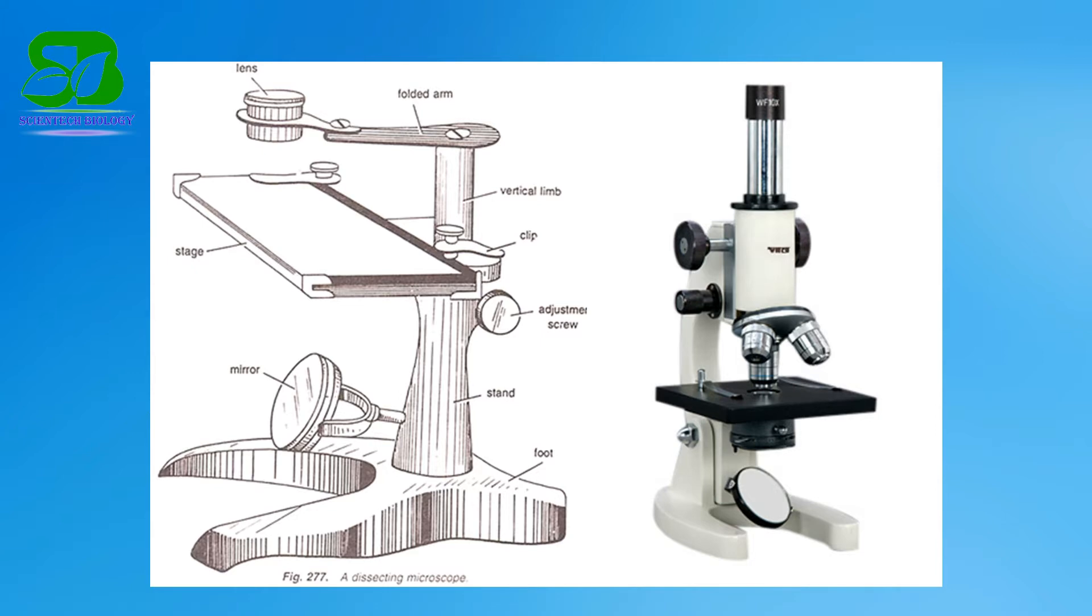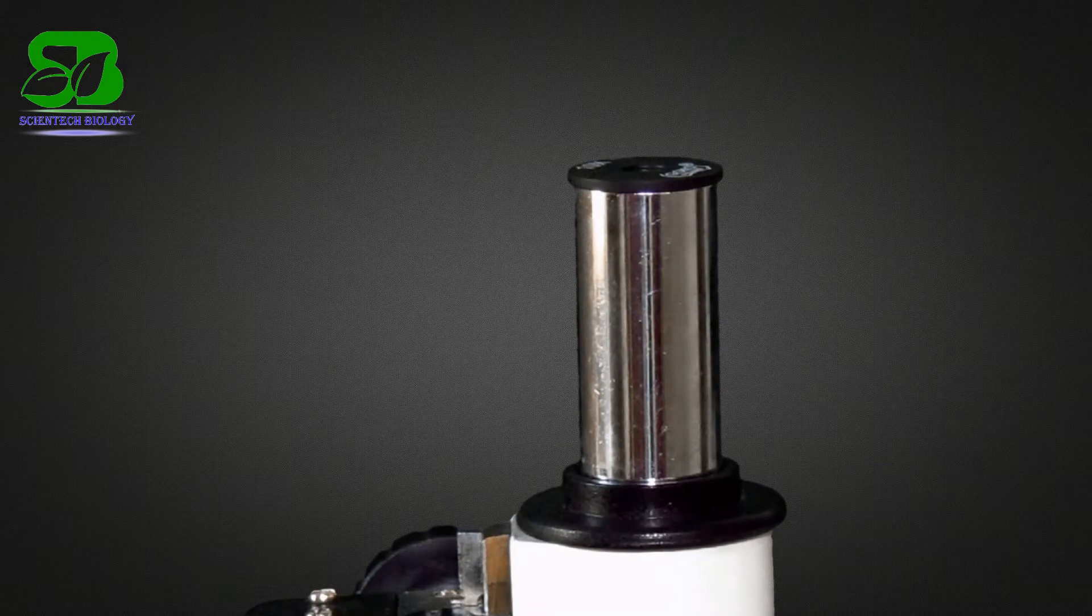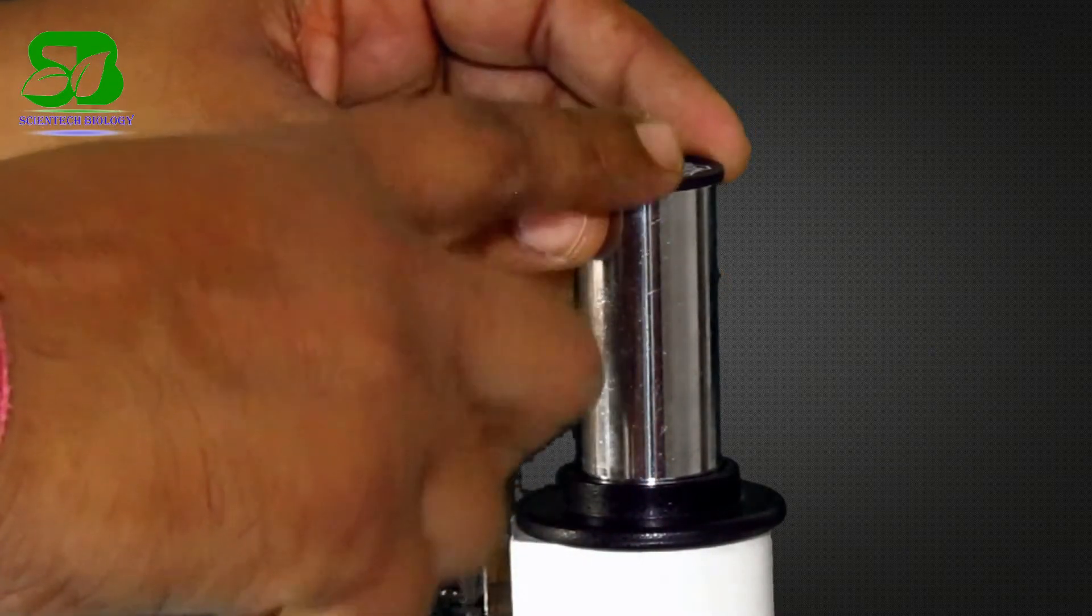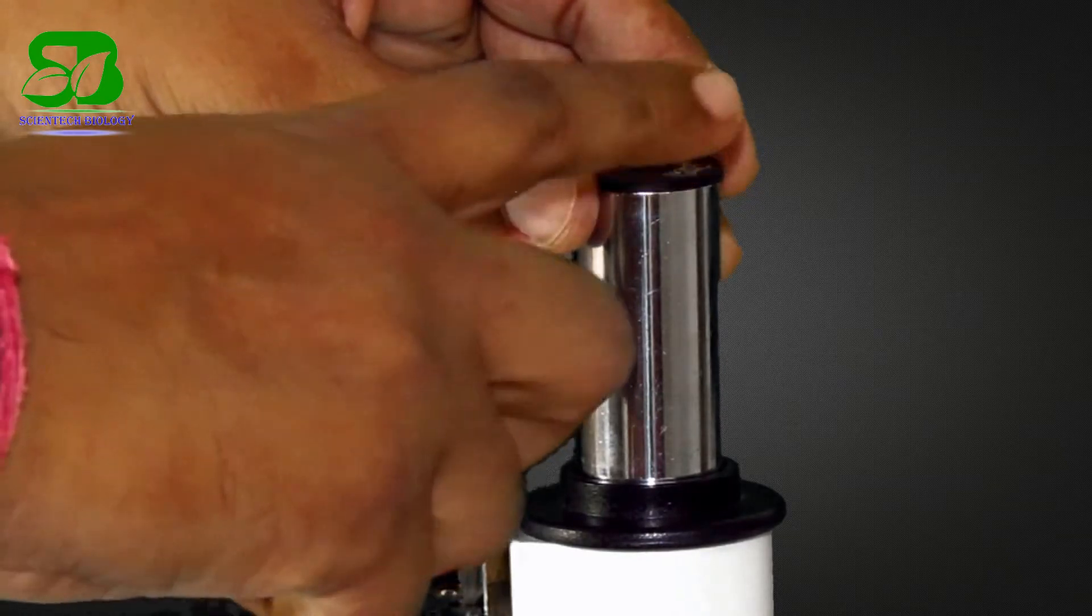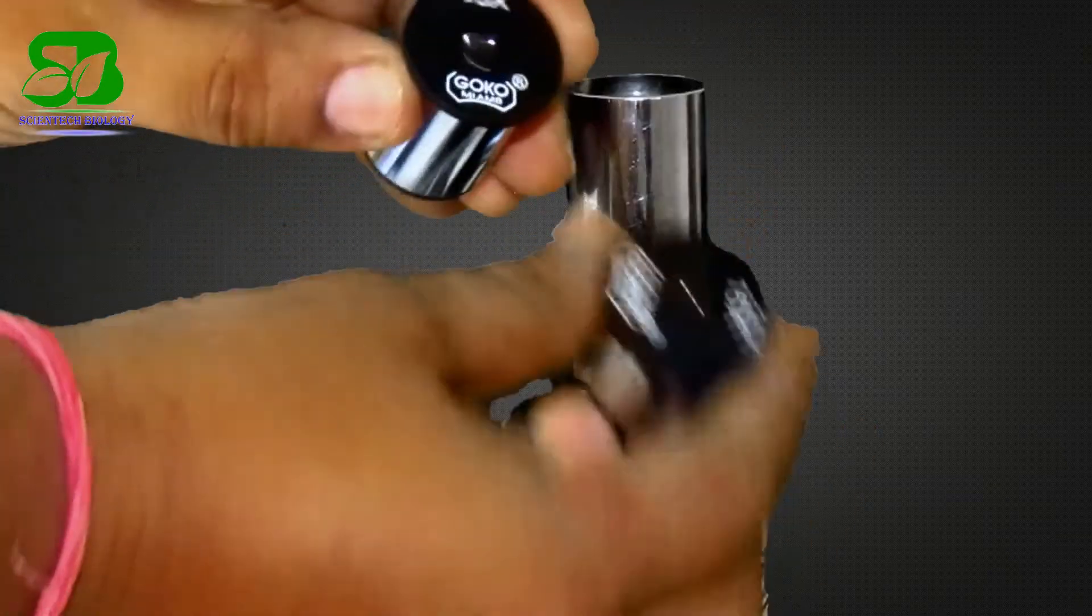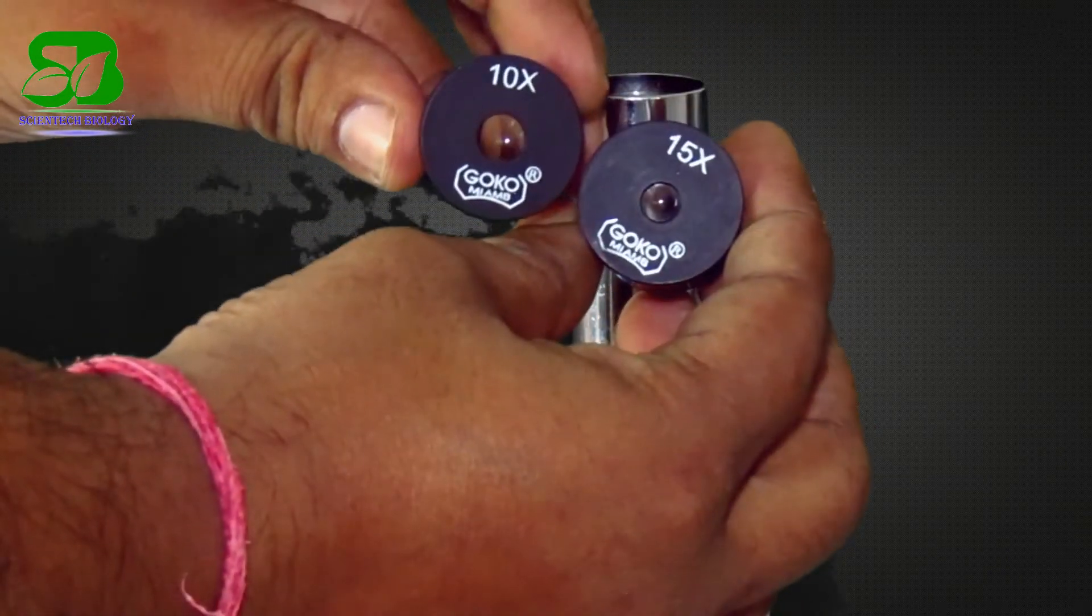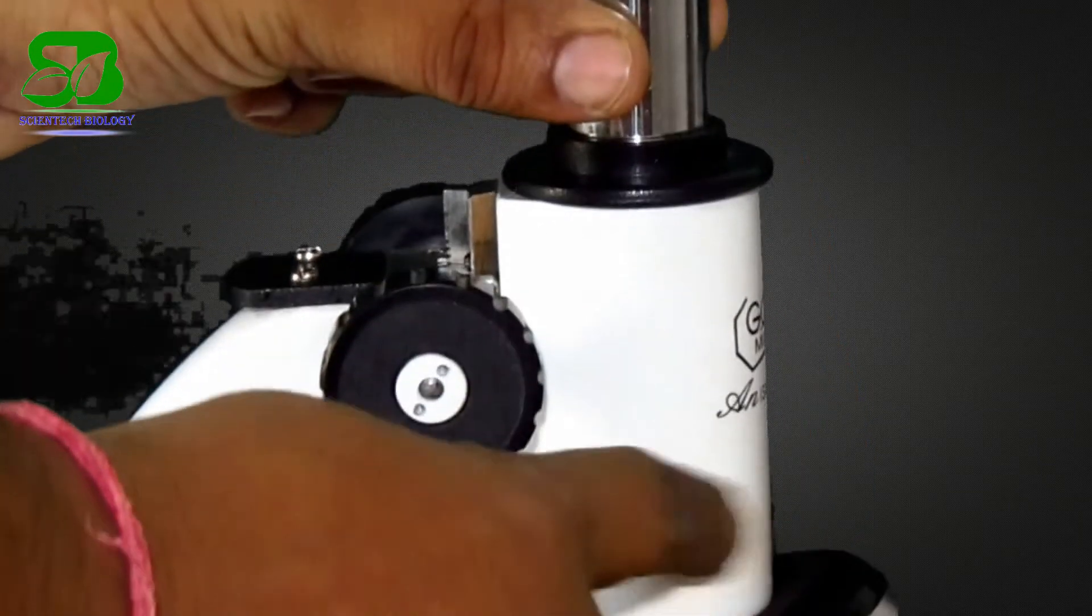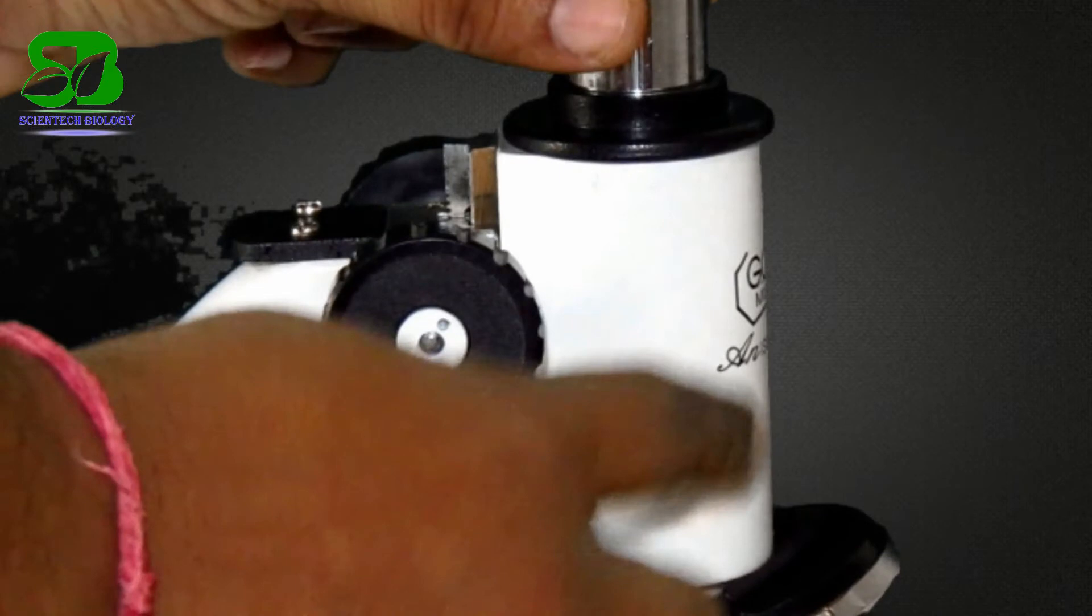One is eyepiece and the other is objective lens. So let's see the parts of the compound microscope. This is the eyepiece lens placed at the top and it is usually 10x or 15x power. Here you can see the tube that connects the eyepiece to the objective lens.